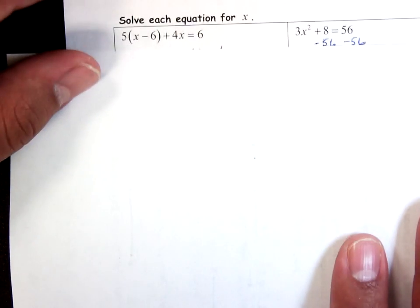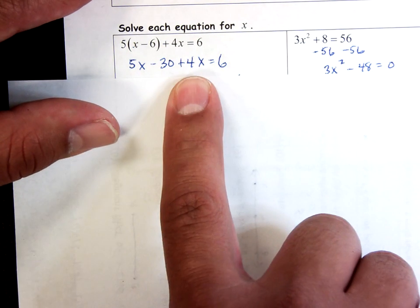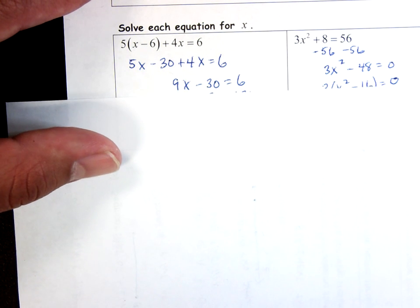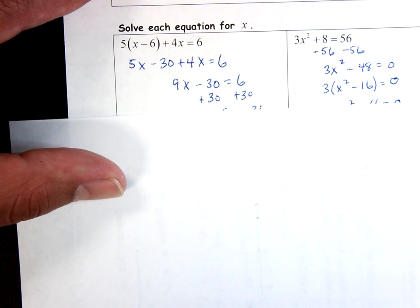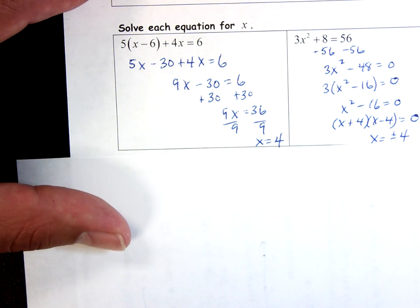We did one of these in class. I get rid of the parentheses first and I get 5x - 30 and I just keep the 4x + 6 and equals 6. Combine your like terms, you get 9x - 30 equals 6. Add 30 to both sides, you get 9x equals 36. Divide both sides by 9, you get x equals 4.